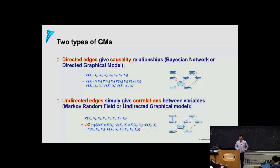Today we are going to start discussing representations of graphical models, and we are going to start from the first type of graphical model, which is the directed graphical model, also known as Bayesian network.